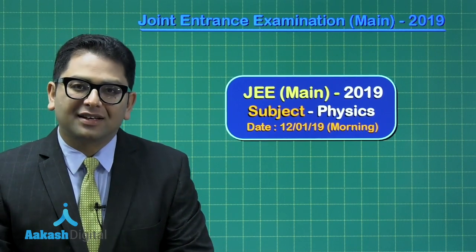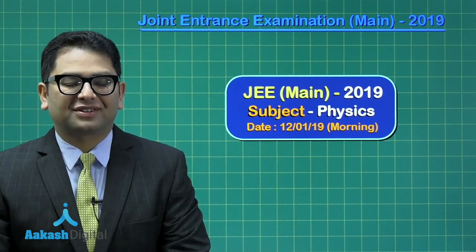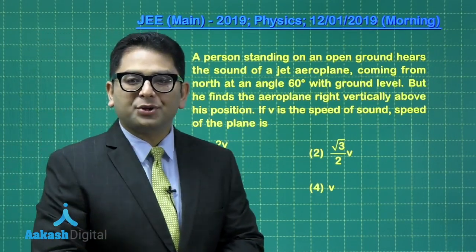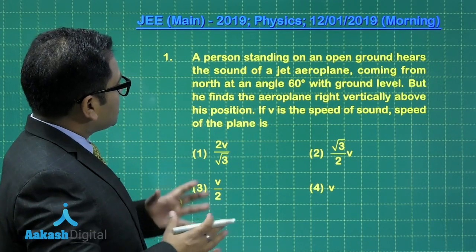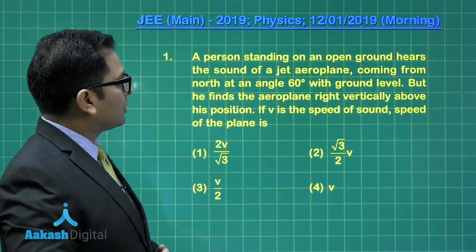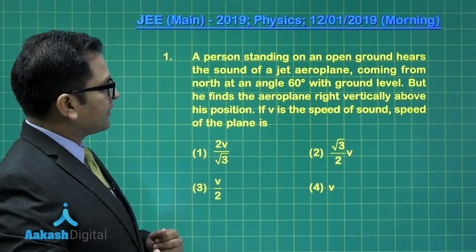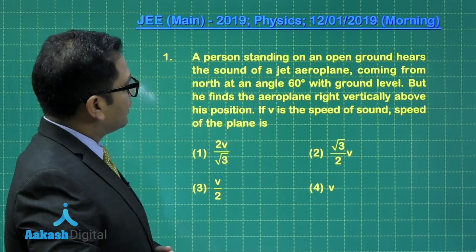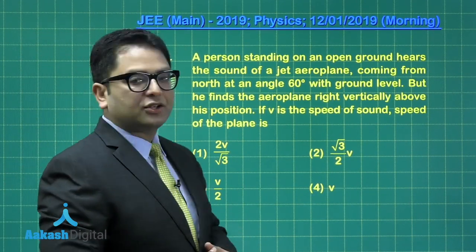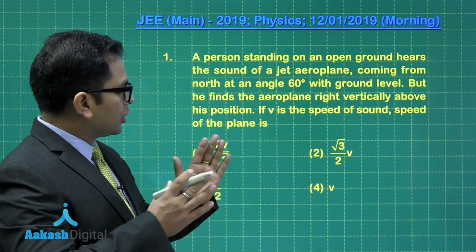Now let's begin the journey of discussion of the 30 questions that had been asked in this particular shift. The first question says a person standing on an open ground hears the sound of a jet airplane coming from north at an angle of 60 degrees, but he finds the airplane right vertically up his position. If V is the speed of sound, we need to calculate the speed of the airplane.